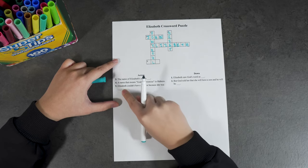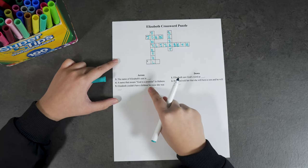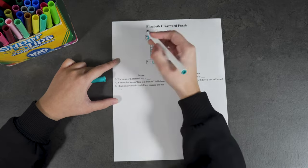Elizabeth. And the last one says, Elizabeth couldn't have children because she was old.